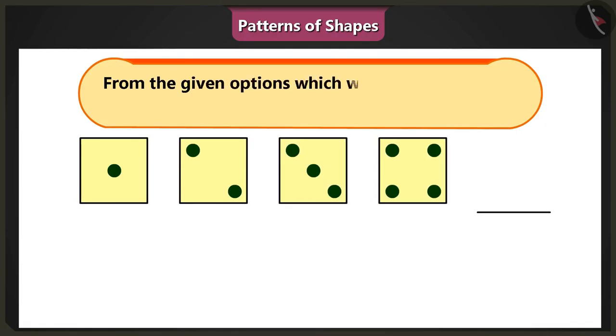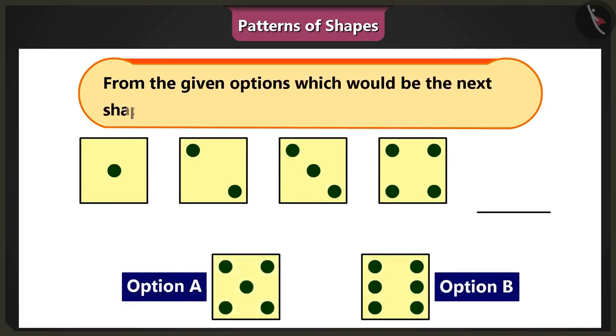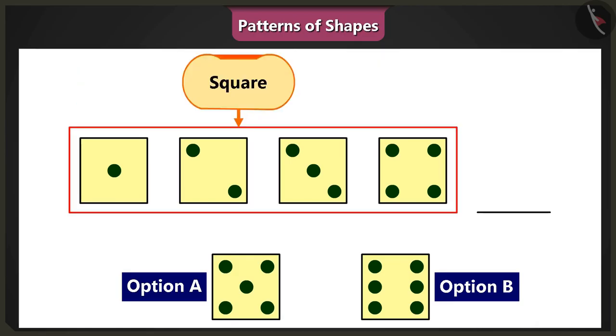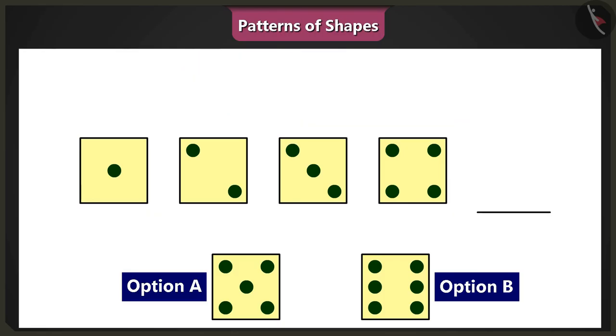Complete the pattern that you see here by choosing one of the two options provided. But all these are square shapes, there is no pattern here. Oh, look closely. All the squares have dots inside them, just see.